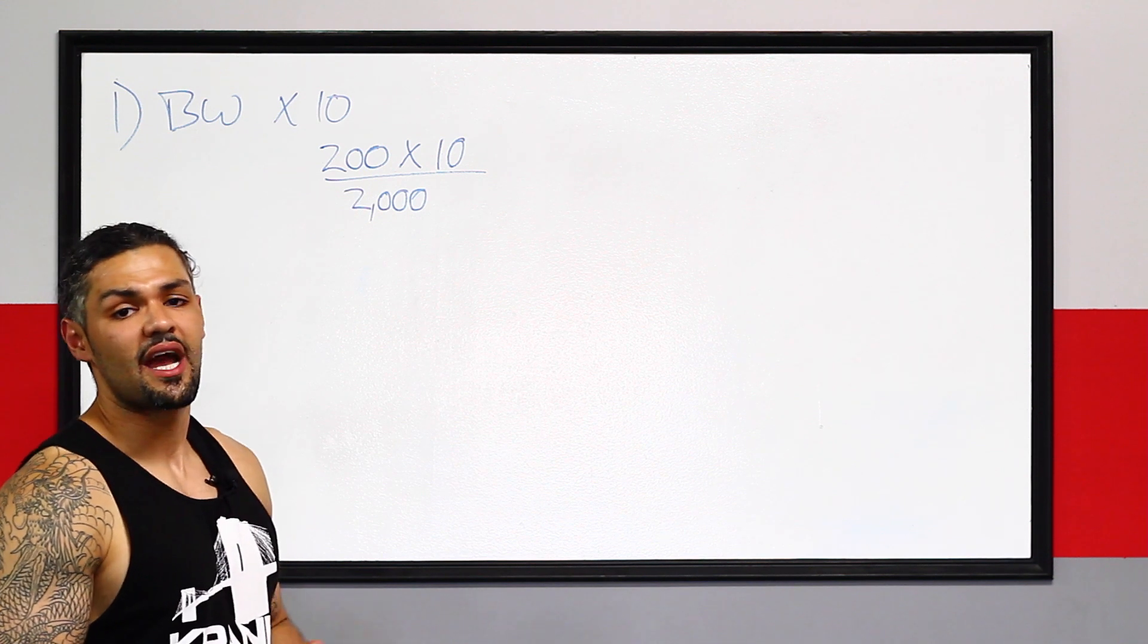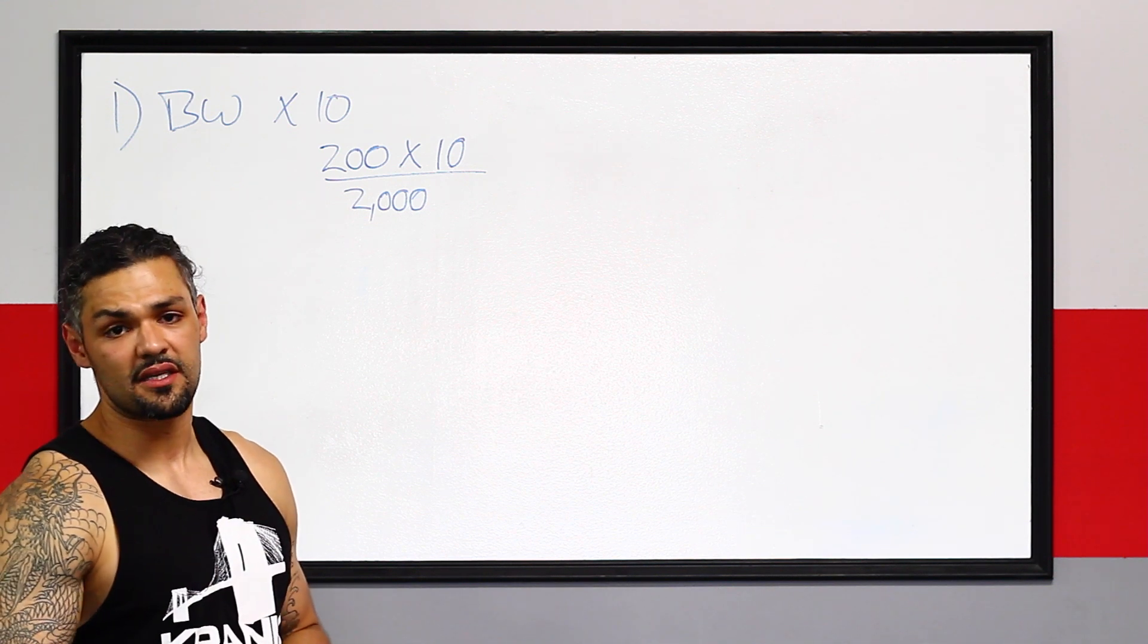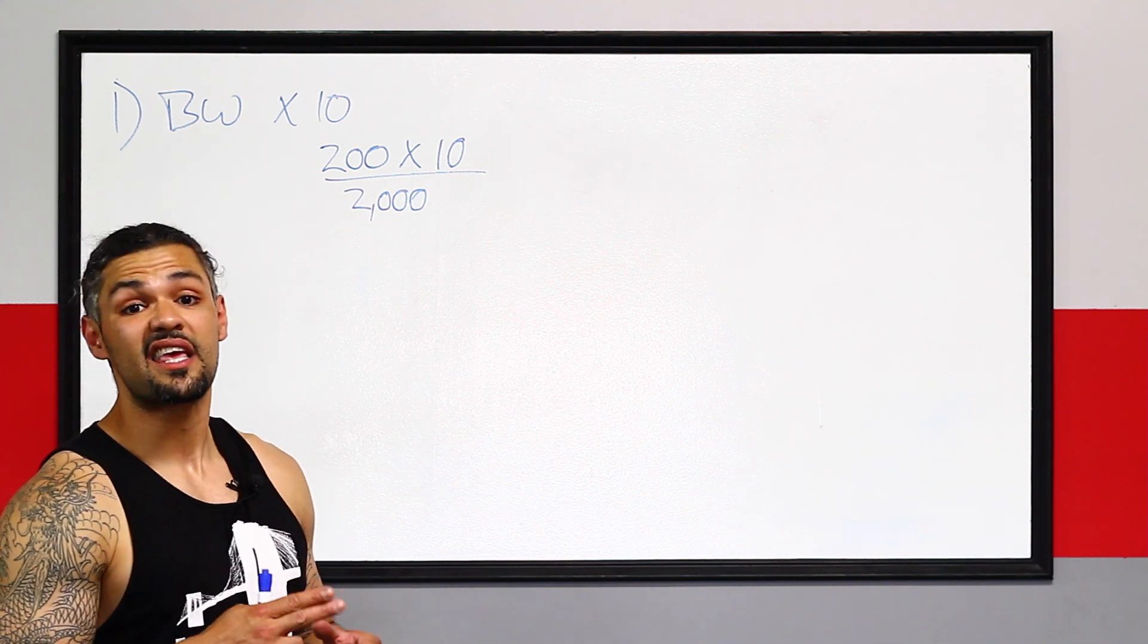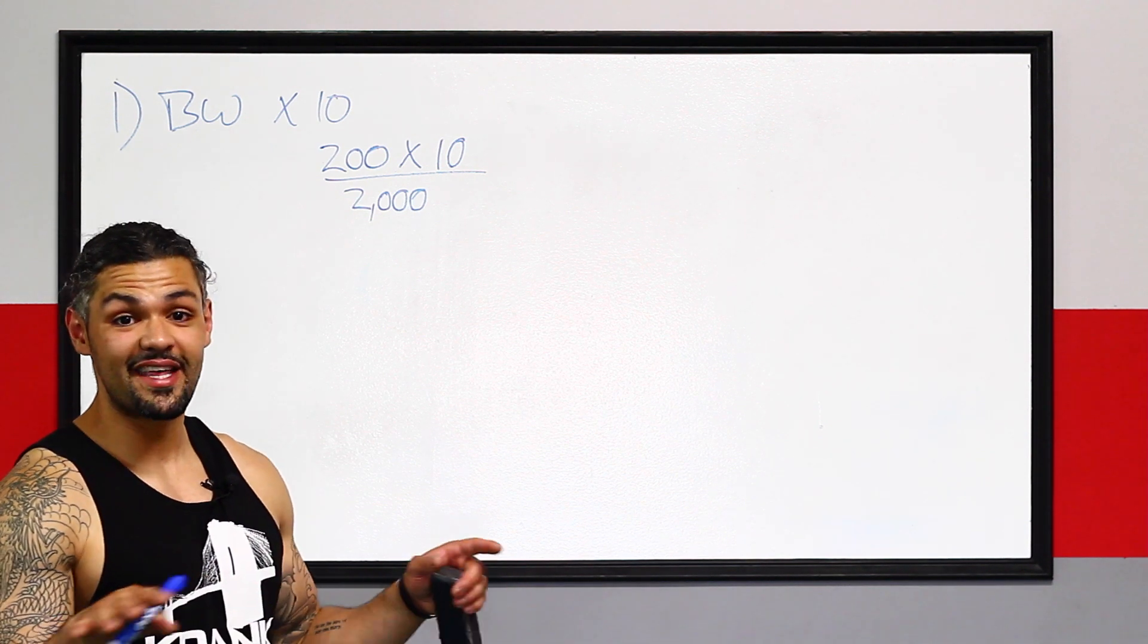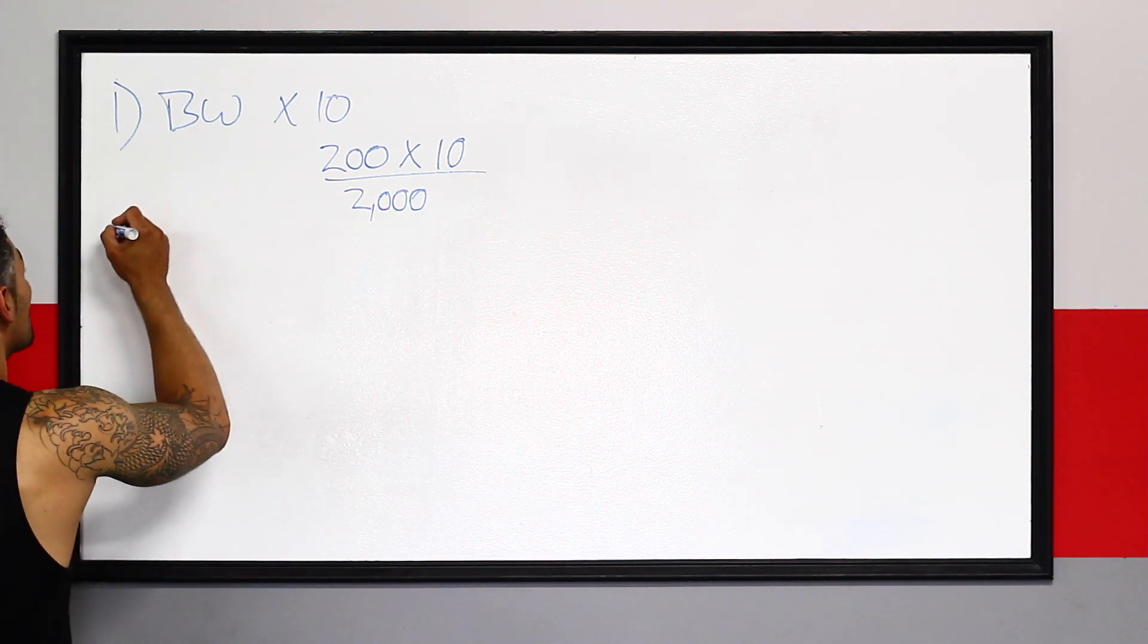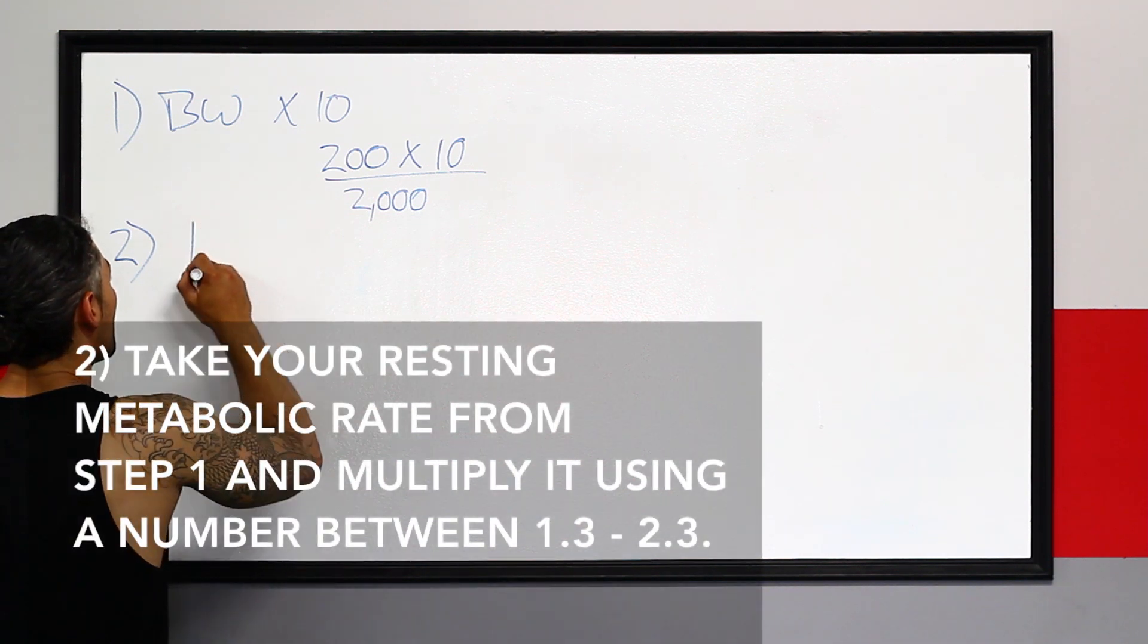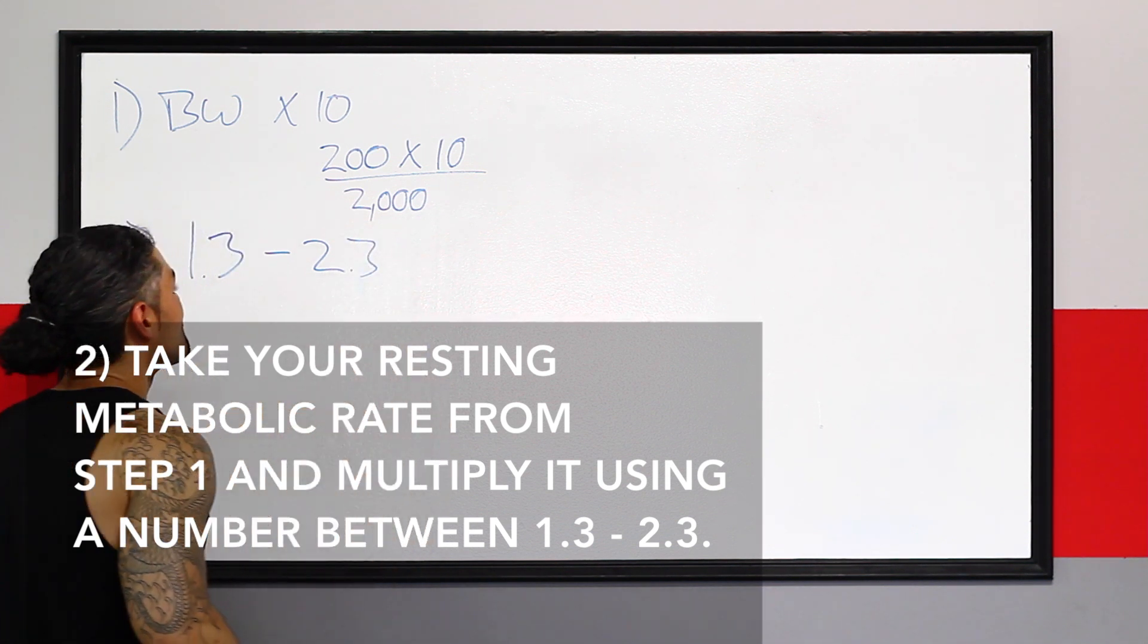Now, we have to take into account something called NEPA, a non-exercise physical activity. And also, we have to take into account the exercise that you do. Working out, running with your kids in the park, non-physical exercise activity, taking a shit, chewing your food, blinking, all these things burn calories. And we have to take this into account. This is part two. Part two to this three-step process. We multiply this by 1.3 to 2.3.